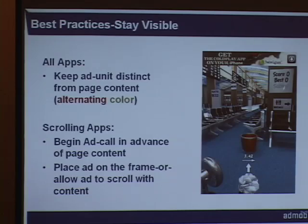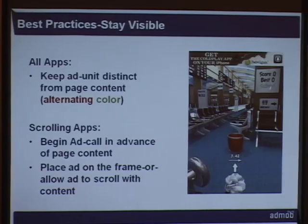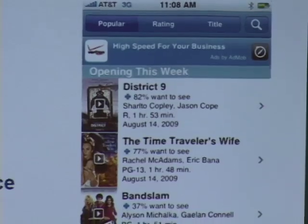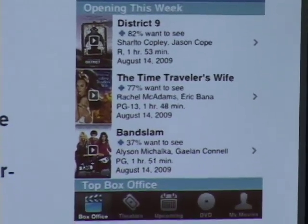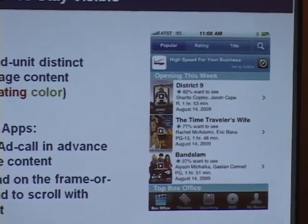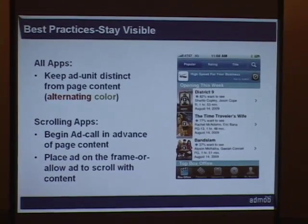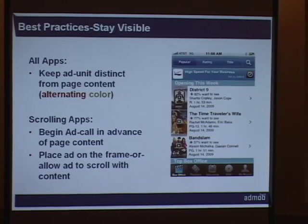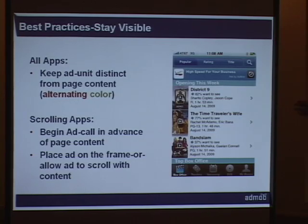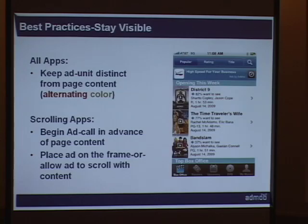Paper Toss does a good example of this. The ad is up there — not where users might accidentally click at the bottom — and the ad really pops. Additionally, for scrolling apps, begin the ad call as fast as you can in advance of the regular page content, because you want users to be able to see the ad while they're still in that frame. If they start scrolling and the ad only shows up after, they're not going to click on it and nobody makes money. Put the ad on the frame so it stays fixed, or have it scroll with the content — generally put it where users can easily see it once you've decided to show an ad.